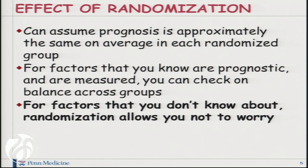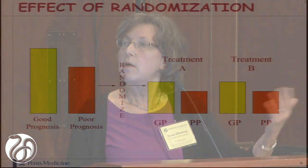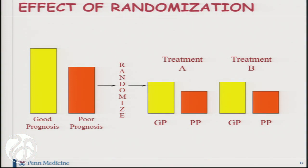The effect of randomization is very simple. It allows you to assume that the prognosis is approximately the same, on average, in each randomized group. For factors that you know are prognostic and are measured, you can check on the balance across groups. But for factors that you don't know about, randomization allows you not to worry. Too often we think we know everything — we know all the important prognostic factors — and we have countless studies showing that we, in fact, do not. We have an initial study population: some of them are good prognosis, some are poor prognosis. When we randomize, we can assume we're going to end up with the same proportion of good prognosis and poor prognosis patients in each treatment group. That's the beauty of randomization.